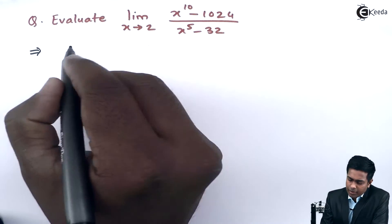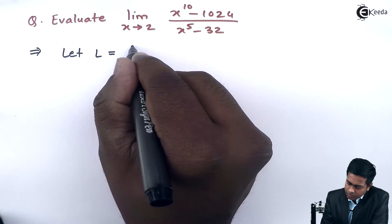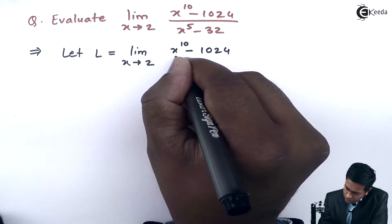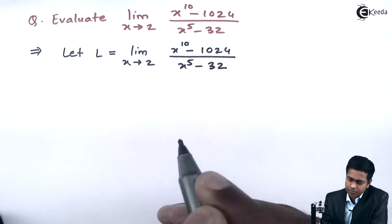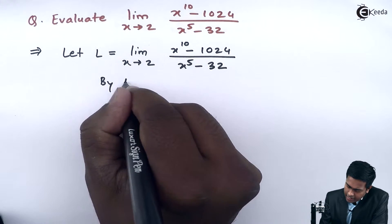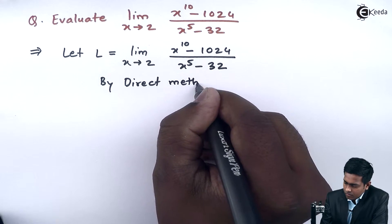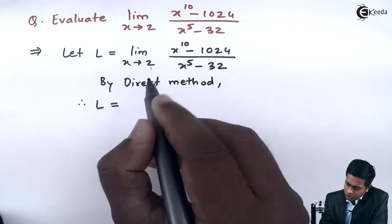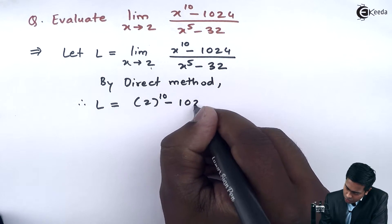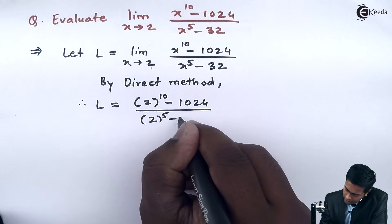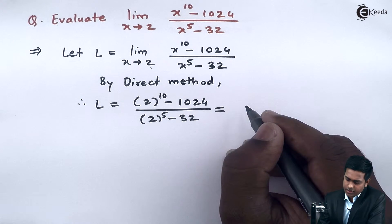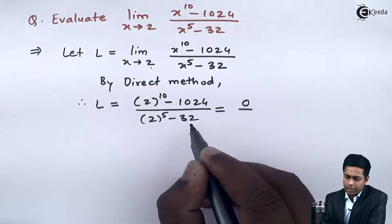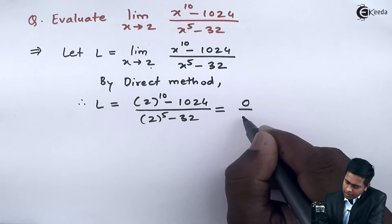First of all, I will assume this given limit as L. So let L equals limit x tends to 2 of x raised to 10 minus 1024 upon x raised to 5 minus 32. By direct method, we will substitute the value 2 directly in the given function. So we get L as 2 raised to 10 minus 1024 upon 2 raised to 5 minus 32. Evaluating this: 2 raised to 10 is 1024 minus 1024, giving 0 in the numerator, and 2 raised to 5 is 32 minus 32, giving 0 in the denominator.